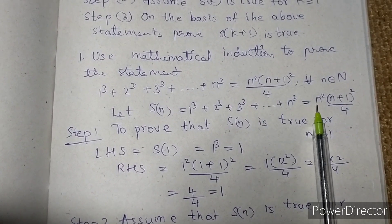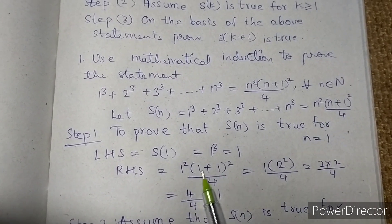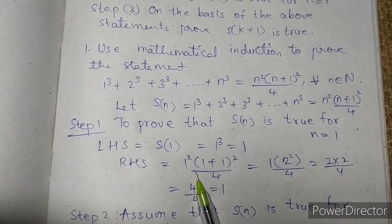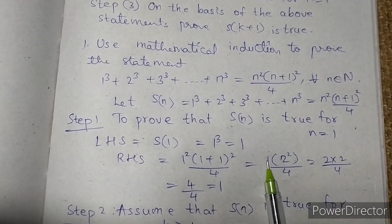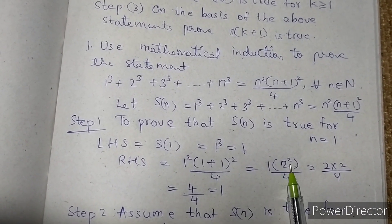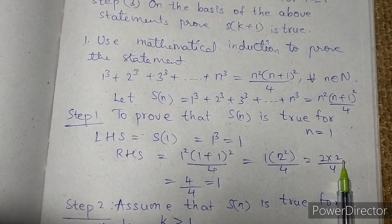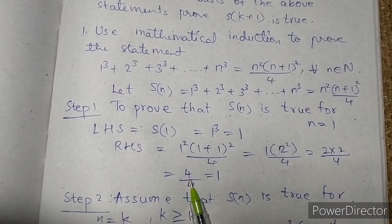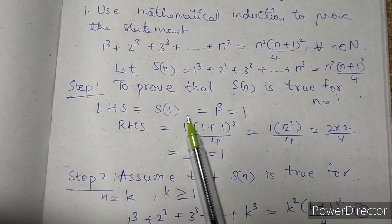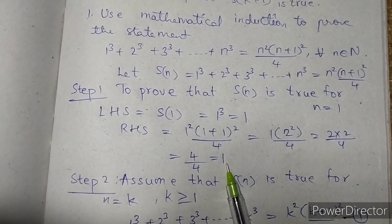The RHS is n² × (n+1)² divided by 4. In place of n we keep 1, giving 1² × (1+1)² divided by 4. Now 1² = 1, and (1+1)² = 2² = 2 × 2 = 4 divided by 4, which equals 1. LHS = RHS = 1, so the statement is true for S(1).